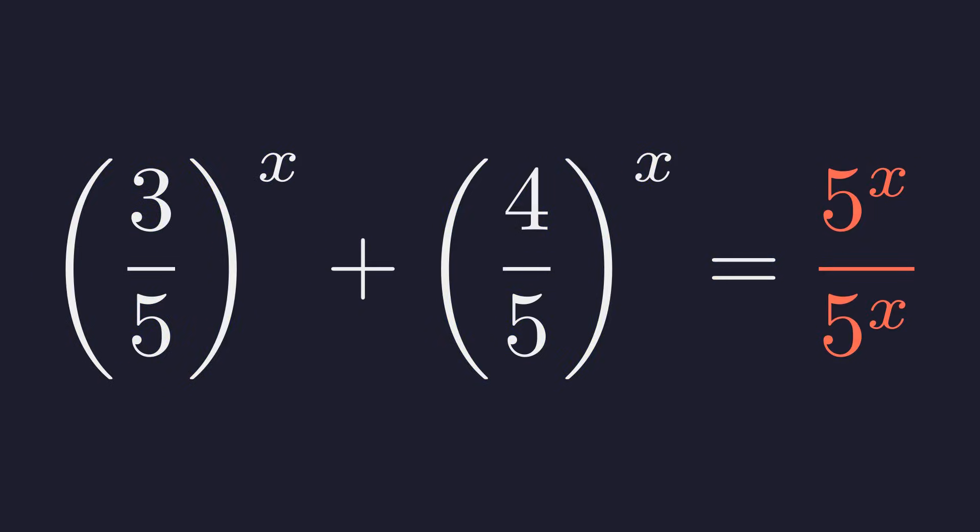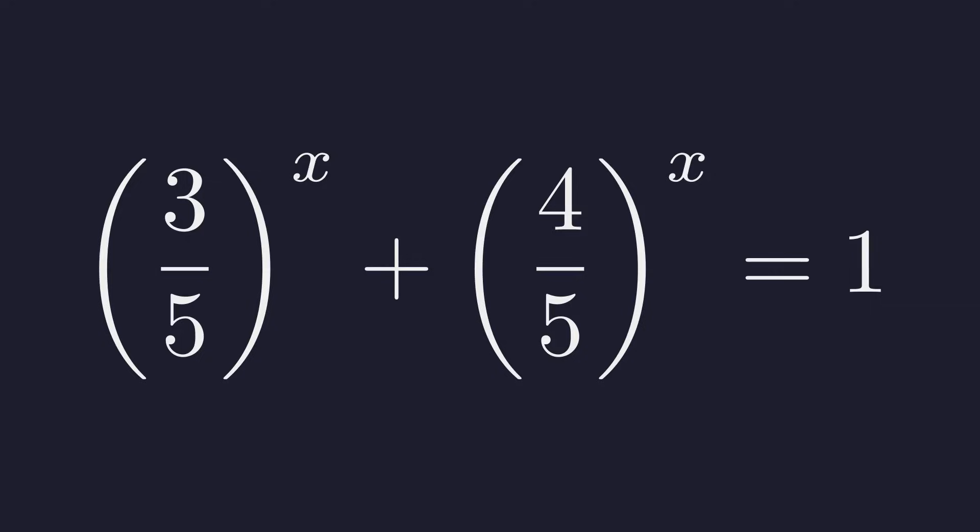On the right side, any non-zero expression divided by itself is simply 1. This gives us our simplified equation.